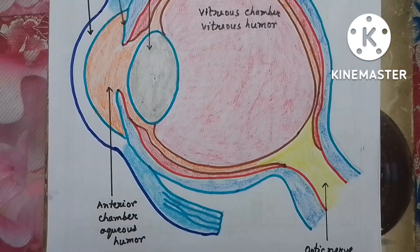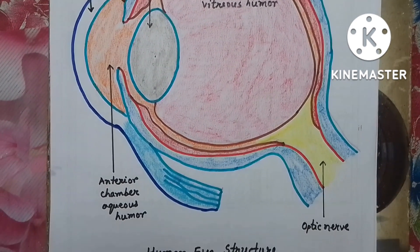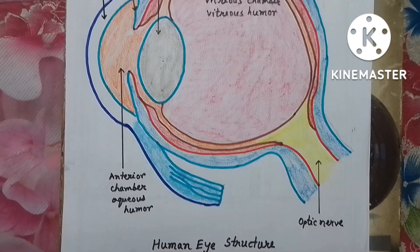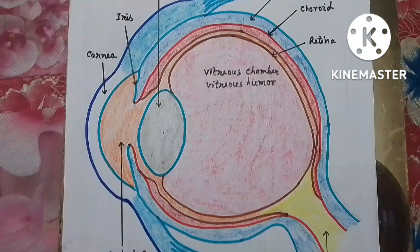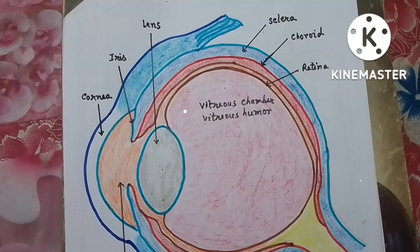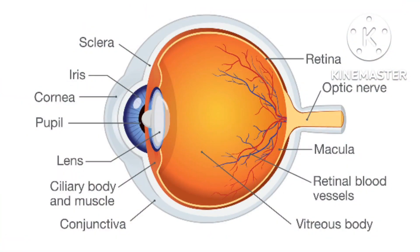My scientific diagram of the human eye is ready now, but don't forget to do the labelling of any scientific diagram. Our eye is a sensory organ. It collects light from the visible world around us and converts it into nerve impulses. The optic nerve transmits these signals to the brain, which forms an image so we can see our outside world.